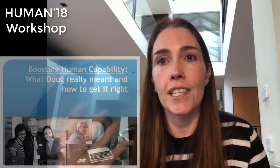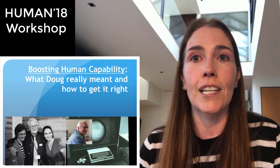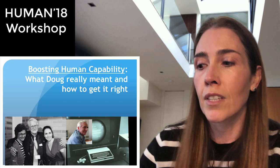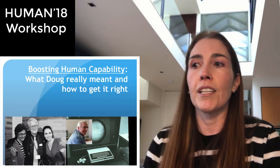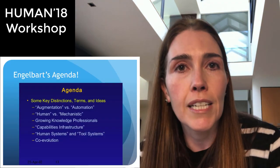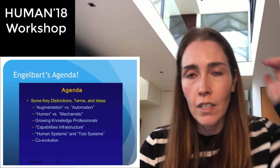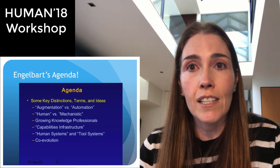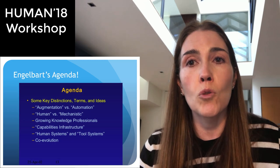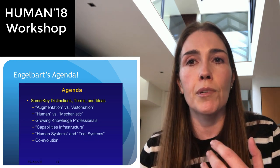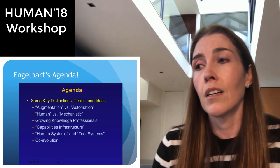What I want to talk about is what Doug really meant by augmentation, by human augmentation, and by creating technologies that actually augment and boost the capacity of human beings — and also why we're not getting that quite right at the moment. I'm going to start with an agenda that was really Engelbart's agenda when he was giving a conference at the World Library Association. Engelbart's first agenda in presenting what augmentation really meant is to distinguish between augmentation and automation — we see a lot of automated systems around us, so how do we distinguish an automated system from true augmentation?